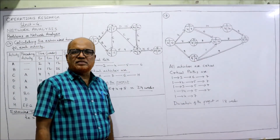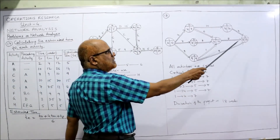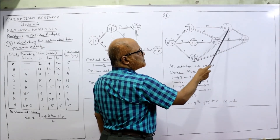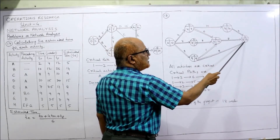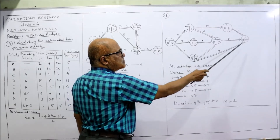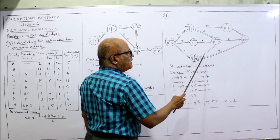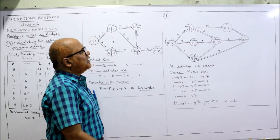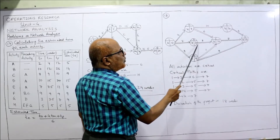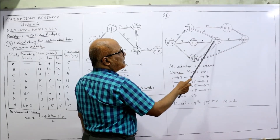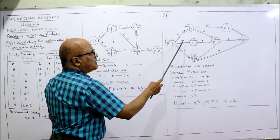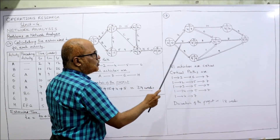Now backward pass. The EST and LFT of the last event are both 18. Working back: 18 − 8 = 10; 18 − 4 = 14; 18 − 9 = 9. Two arrows bursting at node 4: minimum of 18 − 9 = 9 and 10 − 1 = 9, so 9. Two arrows bursting at node 2: minimum of 14 − 10 = 4 and 10 − 6 = 4, so 4. One arrow busting at node 3: 10 − 3 = 7. Three arrows at node 1: 4 − 4 = 0, 7 − 7 = 0, 9 − 9 = 0.